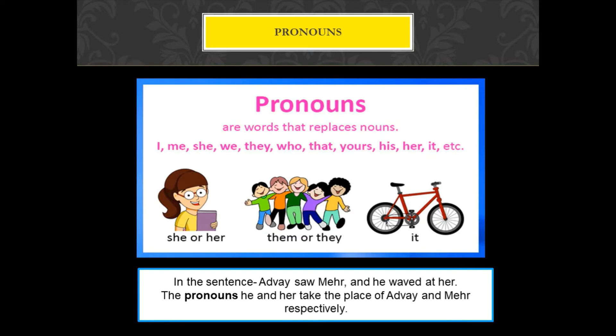In the sentence, 'Advai saw Meher and he waved at her,' the pronoun 'he' and 'her' take the place of Advai and Meher respectively. So every time we are not going to say Advai or Meher repeatedly. Instead, we are going to use the pronouns 'he' and 'her'.